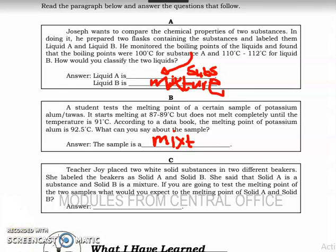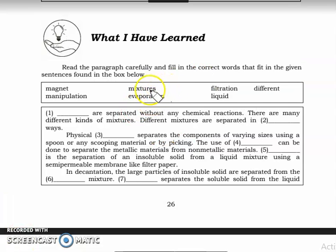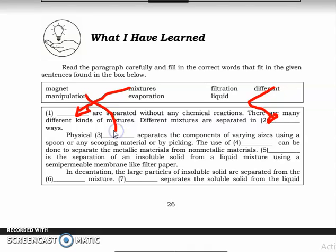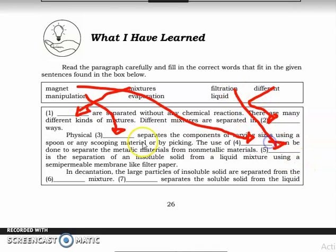Number one answer: it's mixture. Number two: it's different. Number three: the answer is manipulation. Number four: it's magnet. Number five: filtration. Number six: liquid. Number seven: it's evaporation.